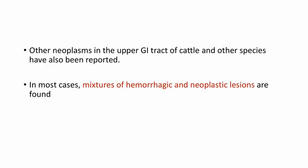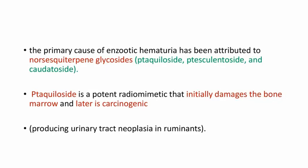Other neoplasms in the upper GI tract of cattle and other species have also been reported. In most cases, mixtures of hemorrhagic and neoplastic lesions are found. The primary cause of enzootic hematuria has been attributed to norsesquiterpine glycosides — that is ptaquiloside, ptesculentoside, and caudatoside. Ptaquiloside is a potent radiomimetic that initially damages the bone marrow and later is carcinogenic.